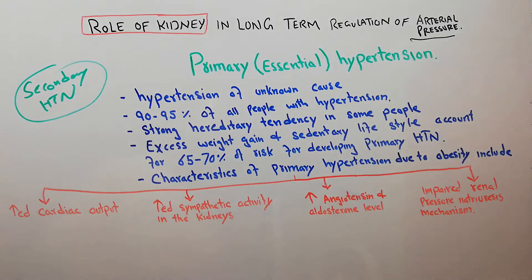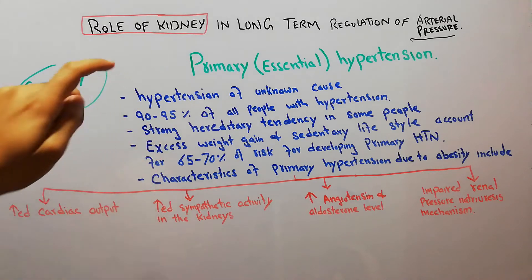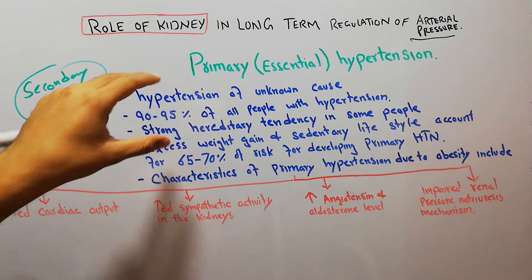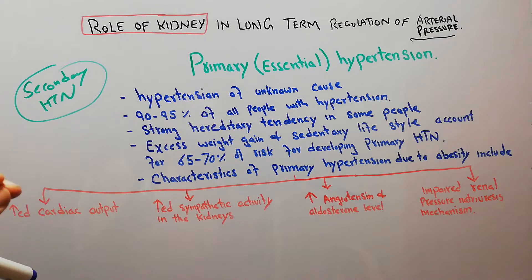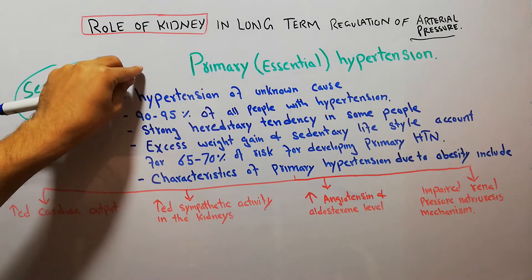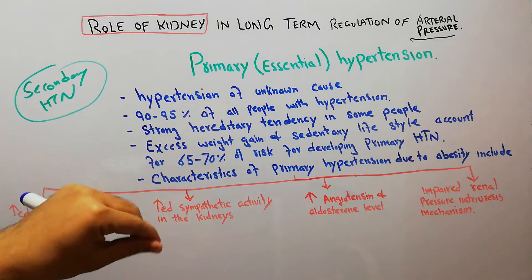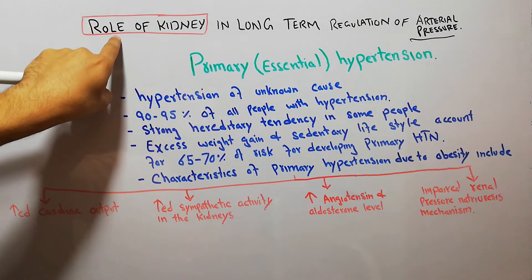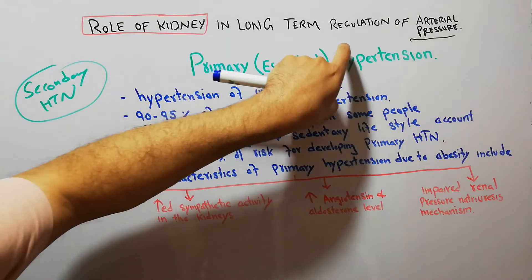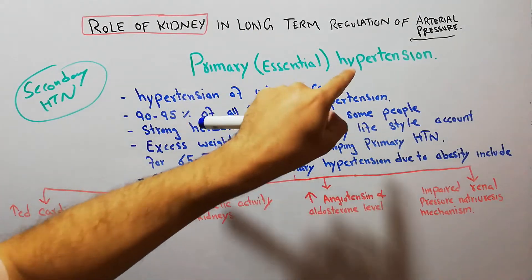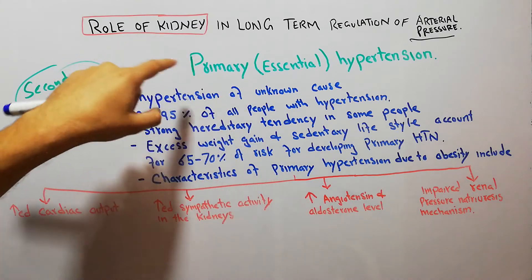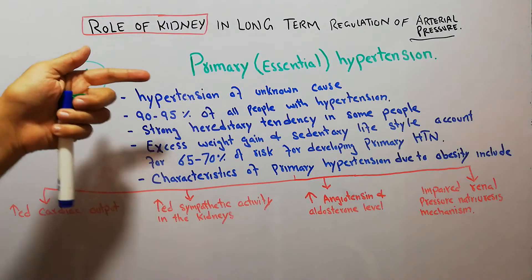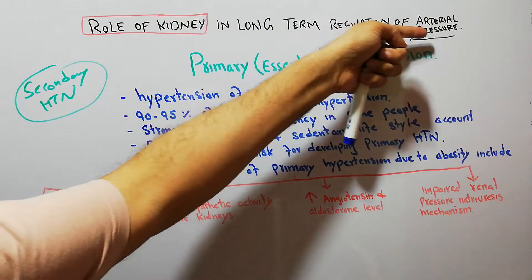We are not going into the details of medicine, treatment, and management of patients with hypertension. We have discussed different types of hypertension in our last few lectures, which were basically due to angiotensin, volume overload, or vasoconstriction. Today we are discussing primary essential hypertension, in which the kidney has some role in its cause. This topic is being discussed under the role of the kidney in long-term regulation of arterial pressure.